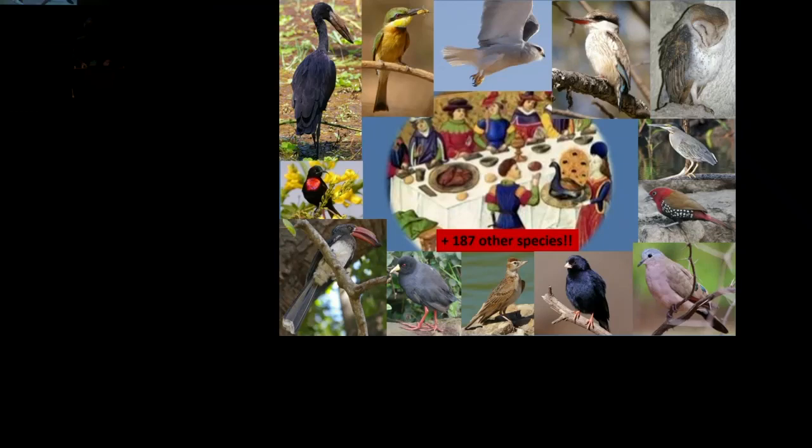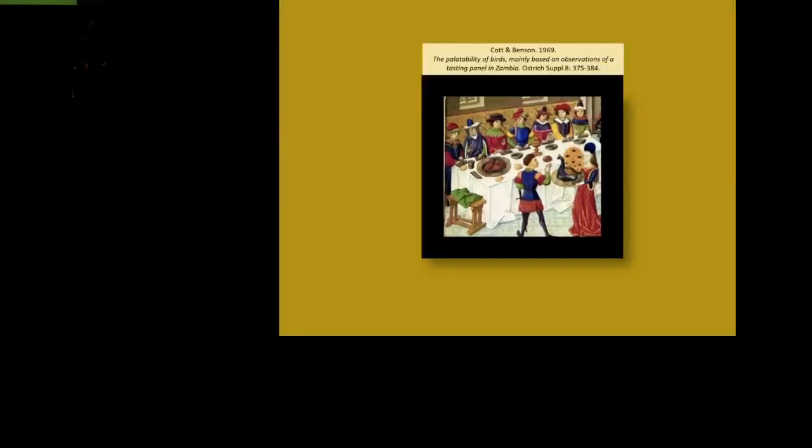Now, the way they tasted them, as I say, it was a blind tasting. Benson's wife, Molly, she's bottom right, she prepared just the pectoral muscle in the kitchen. So you can imagine how many scarlet-chested sunbirds went into it. She cooked them in a frying pan with no oil, no condiments, and people didn't know what the species was. They just wrote down a number between two and nine to decide how palatable they were.